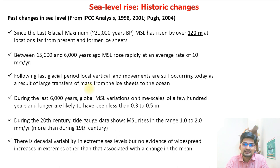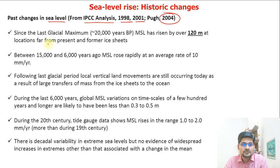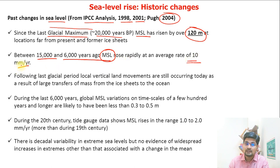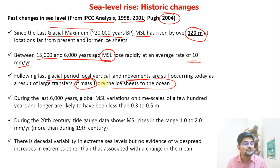Looking at the history of these changes, there have been historical changes already recorded. Based on IPCC analyses of 1998, 2001, and 2004, since the last glacial maximum — approximately 20,000 years ago — mean sea level has risen by 120 meters. Between 15,000 to 6,000 years ago, mean sea level rose at an average rate of 10 millimeters per year. Following the last glacial period, local vertical land movements are still occurring today as a result of large transfers of mass from ice sheets to the ocean, also changing isostasy through eustatic adjustment.